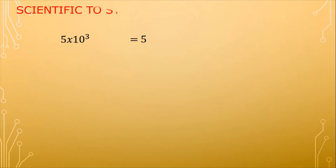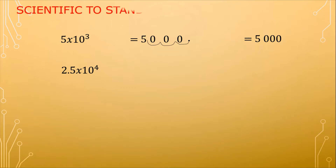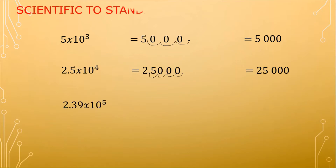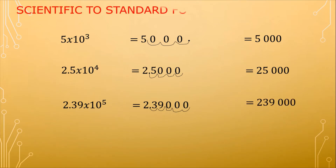The exponent is 3, so we move 1, 2, 3 places to the right, and that gives us 5,000. Another example: 2.5 times 10 raised to the fourth power. The exponent indicates how many times we move, so 2.5 moved 4 places: 1, 2, 3, 4 gives us 25,000. Another one is 2.39 times 10 raised to the fifth power: move 1, 2, 3, 4, 5 places, and that gives us 239,000.